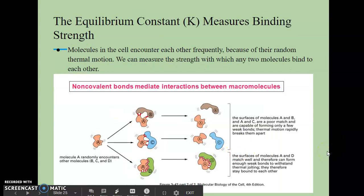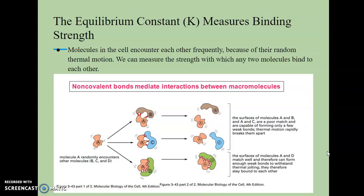So as we talk about proteins, we have a way to actually measure the binding strength between a protein and its ligand. And we call that the equilibrium constant. And normally we will measure that as K. And when we get further into the enzymes lecture, we'll refer back to this equilibrium constant. So the idea is that molecules in general in the cell will often encounter each other very frequently, not just proteins, but all molecules, because they're usually experiencing this random kind of thermal motion. And so we can measure the strength with which any two of these molecules can bind to each other. And that's kind of what this diagram is showing you.